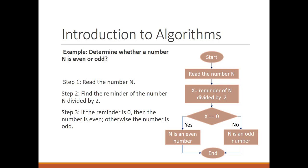For example, let's write a program that determines whether a number n is even or odd. The steps are: read the number n, then find the remainder when n is divided by 2. If the remainder is 0, the number is even; otherwise, if the remainder is 1, the number is odd. The flowchart starts with a 'start' oval and ends with an end oval, and uses rectangles for tasks and diamonds for decisions, connected by arrows.